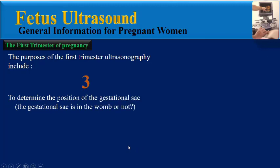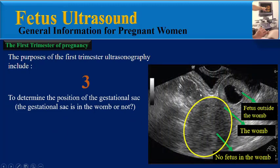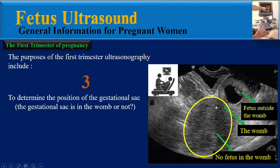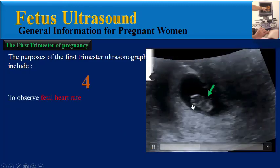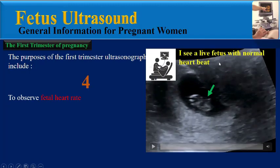The third purpose is to determine the position of the gestational site — whether the gestational site is in the womb or not — like this transvaginal image where we can see the womb but no fetus inside, and there is a fetus outside the womb abnormally. The physician reports: the womb is empty and the pregnancy sac is seen outside the womb. The fourth purpose is to observe fetal heart rate, like this fetus where the physician reports: I see a live fetus with normal heartbeat.